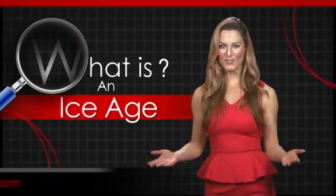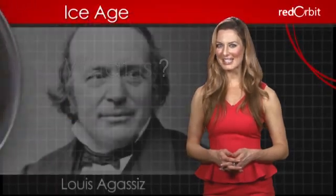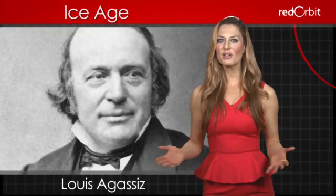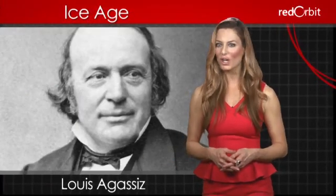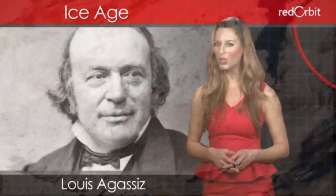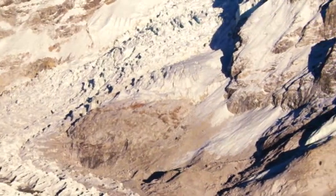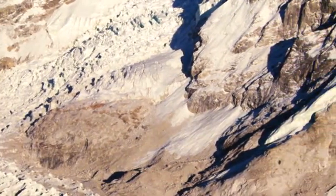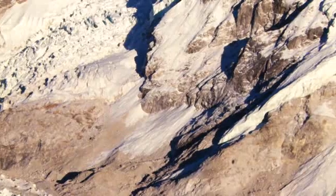In 1840, Swiss scientist Louis Agassiz noticed glaciers — huge rivers of ice created by snowfall — occurring throughout northern Europe. As glaciers moved, they transport rocks and scour the ground beneath them, leaving evidence of their passing.